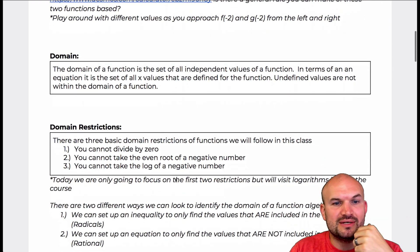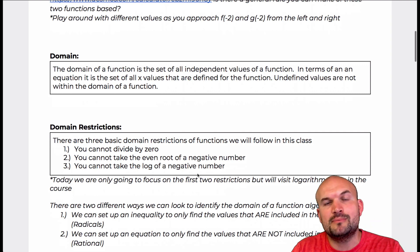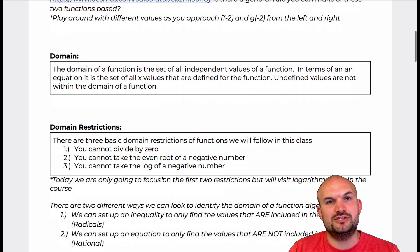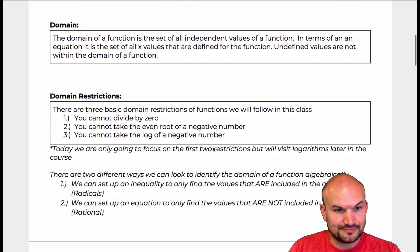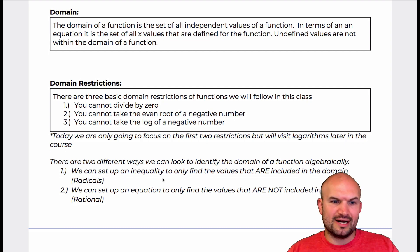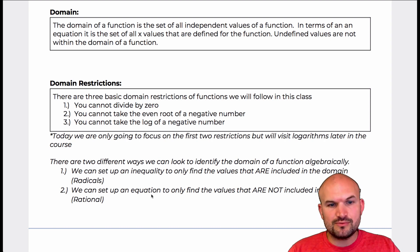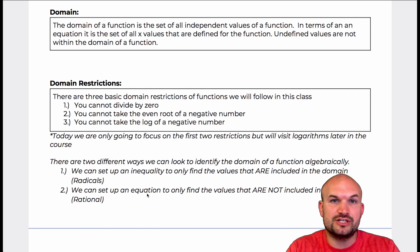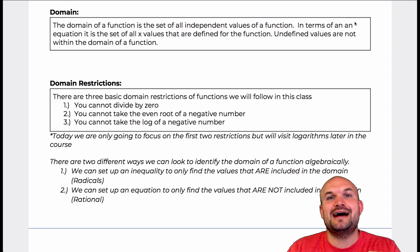The third restriction is you cannot take the logarithm or natural logarithm of a negative number. We'll cover that more once we get into logarithms. For this video, we're primarily focusing on rational and radical expressions. For radicals, set the radicand greater than or equal to zero to find values in the domain. For rational functions, set the denominator equal to zero to find values not in the domain. Examples for each will be broken down in the next videos.